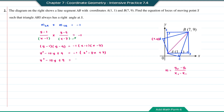Expanding the right hand side gives negative X squared plus 8X minus 7. Moving everything to the left hand side and rearranging: X squared plus Y squared, the positive 8X becomes negative 8X, minus 10Y, and 9 plus 7 equals positive 16. This equals 0. So X squared plus Y squared minus 8X minus 10Y plus 16 equals 0 will be the equation of locus of moving point S.